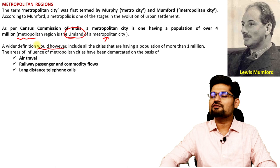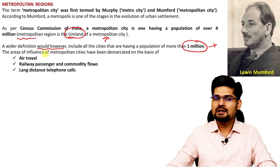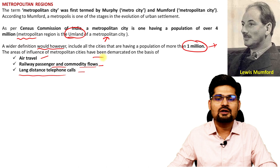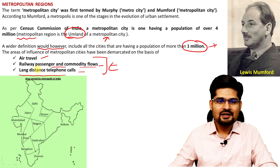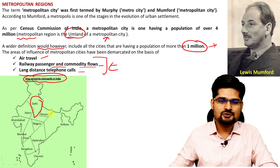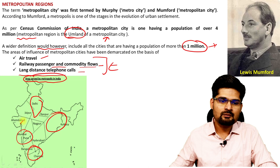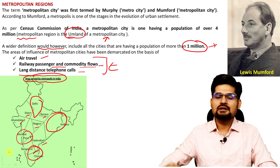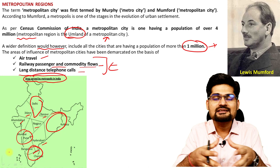A metropolitan region is essentially the umland of a metropolitan city. A wider definition would also include at least a million population or more, where air travel, railway passenger and commodity flows, and long-distance telephone calls are present. In the context of India, metropolitan areas served by a metropolis include Delhi, Kolkata, Mumbai, Chennai, and in between them, Ahmedabad, Jaipur, Kanpur, Nagpur, Hyderabad, Pune, and Bangalore.